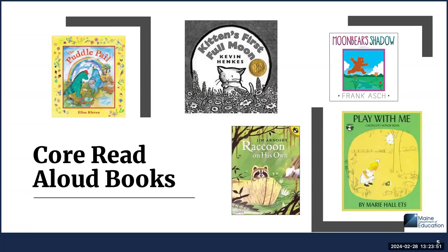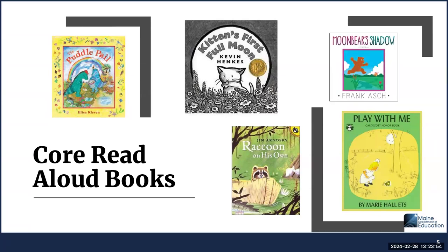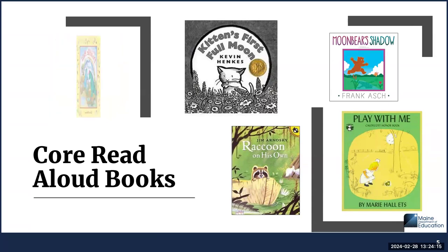The fourth story in the unit is Moon Bear's Shadow. In this story, Bear is out fishing and his shadow keeps scaring the fish away. Bear tries to get rid of his shadow. You will have discussions about feelings, aspects of nature including the times of day, the shadow, and why he can't get rid of his shadow.